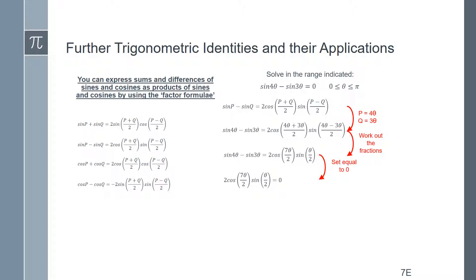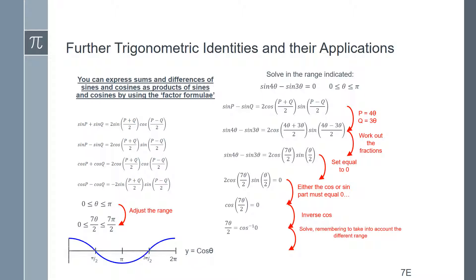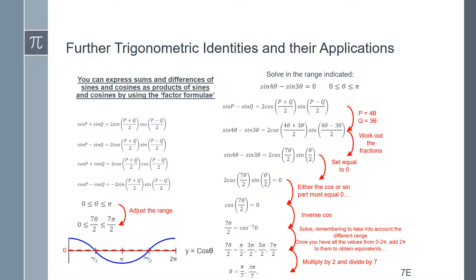Since it's a product of two things equal to zero, either cos(7θ/2) or sine(θ/2) must be zero. For cos(7θ/2) = 0: the original range is 0 to π, so the new range for 7θ/2 is 0 to 7π/2. The inverse cosine of 0 occurs at π/2, 3π/2, 5π/2, and 7π/2. Converting back to θ by multiplying by 2 and dividing by 7 gives: π/7, 3π/7, 5π/7, and π.